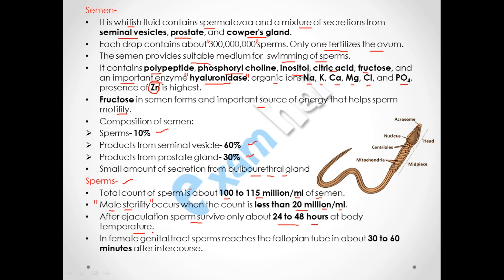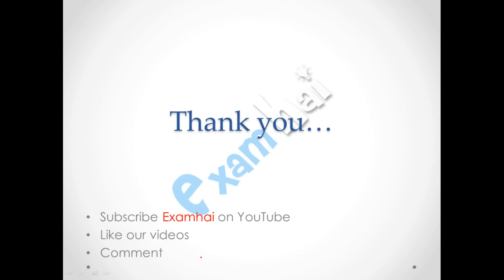After ejaculation, sperm survive for about 24 to 48 hours at body temperature. In the female genital tract, sperm reaches the fallopian tube in about 30 to 60 minutes after intercourse. The fallopian tube is the area where the egg is present, so the sperm can fuse with it and form a zygote.